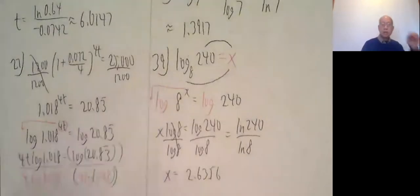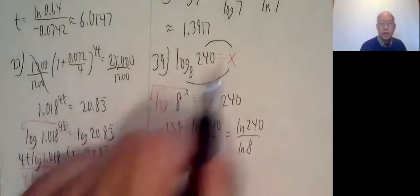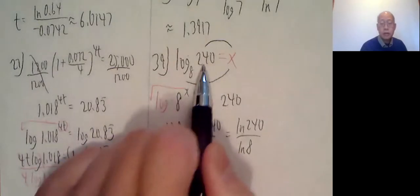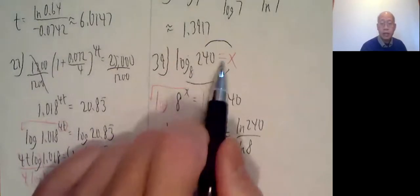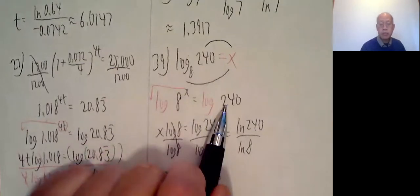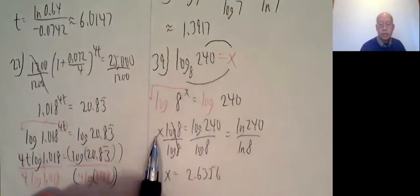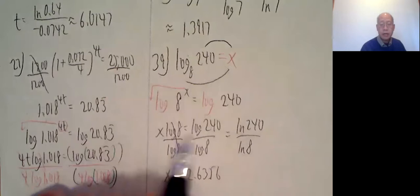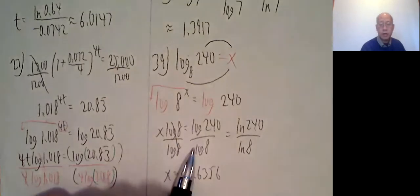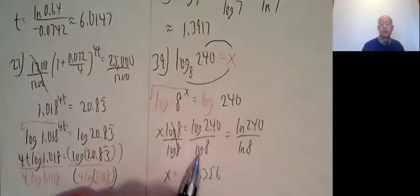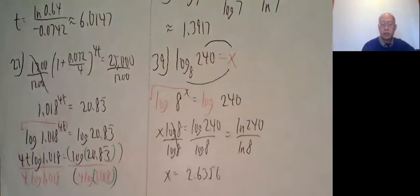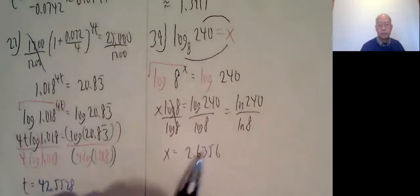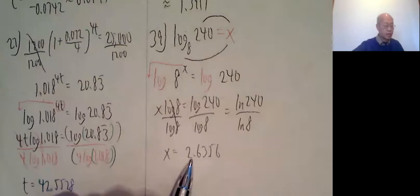So for 39, log base 8 of 240. If I work it out, I call it x, unscramble it. 8 to the x equals 240. Log both sides, x comes down. x log 8 equals log 240 divided by log 8. Log 240 over log 8 or ln 240 over ln 8 comes out to be 2.6356.